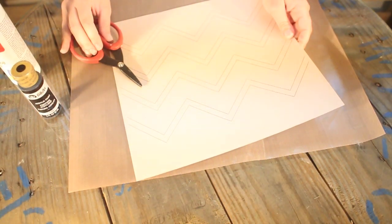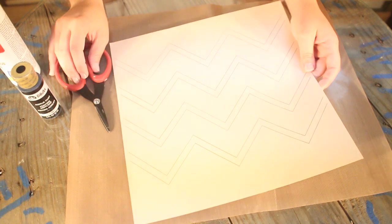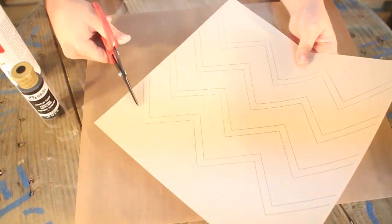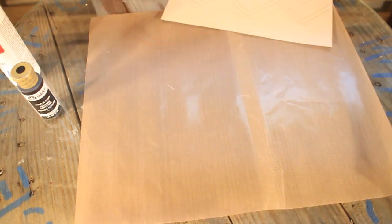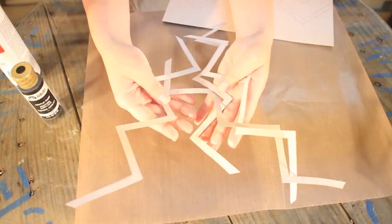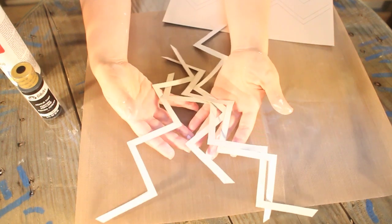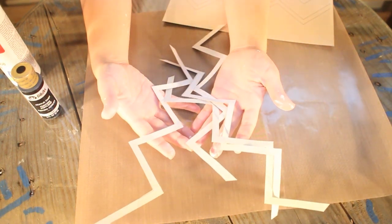First you're going to have to cut your chevron pattern. Using scissors cut around your pattern. Once you're done you'll have four pieces that look like this. This is what you're going to use to create the pattern on the frame.